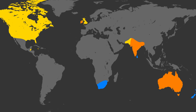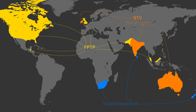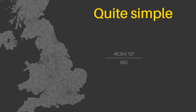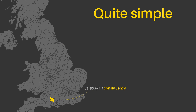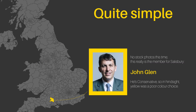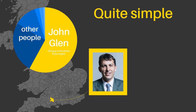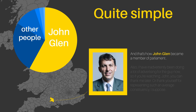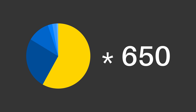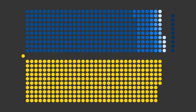Countries in the anglosphere predominantly use a voting system called first-past-the-post, or FPTP. It's really quite a simple system: you divide the population by the number of seats in parliament and carve out chunks of the country that have roughly that number of people in them. These you'd call constituencies or electoral districts, and each is represented by a single member of parliament. Whoever gets the most votes in a constituency gets to be the member of parliament for that constituency, and with this happening in every constituency of the country you'd soon end up with a parliament filled with elected members.